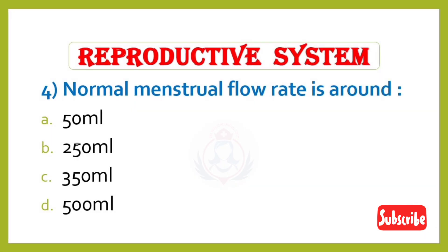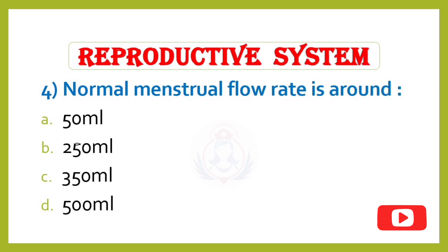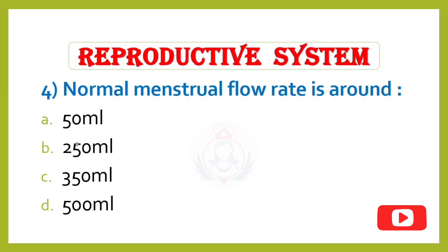Question 4. Normal menstrual flow rate is around: Option A – 50 milliliters, Option B – 250 milliliters, Option C – 350 milliliters, Option D – 500 milliliters. Correct answer is Option A: 50 milliliters.